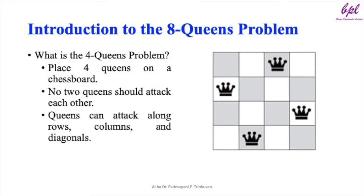Let's start with the introduction of the four queens problem. The four queens problem involves placing four queens on a 4x4 chessboard so that no two queens can attack each other. Queens can attack in a straight line across rows, columns, and diagonals. The goal is to position all four queens in such a way that none of these attacks are possible.